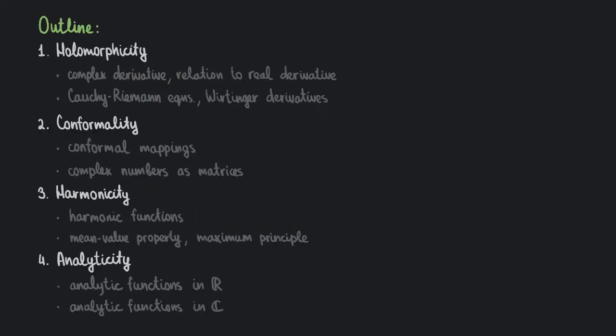When you study complex analysis, you encounter all these different properties functions can have, like being complex differentiable, holomorphic, analytic, and conformal. Most of the time people use them interchangeably, or stick to just one, which is understandable since in the case of complex analysis these notions are equivalent. But fundamentally, in a more general sense, they all have different meanings. So this video is an overview of these notions — I'm going to talk briefly about all of them, clarify how they are related, and what's the difference between them.